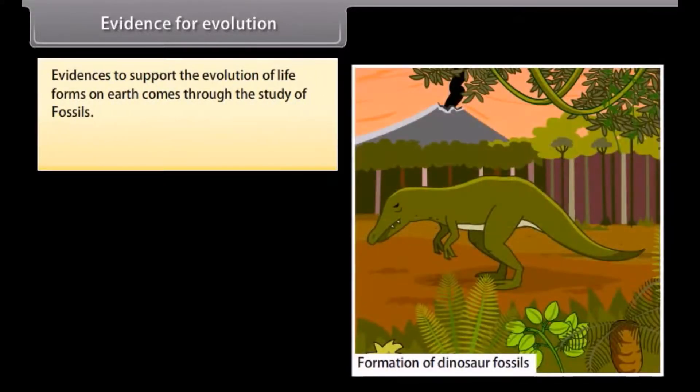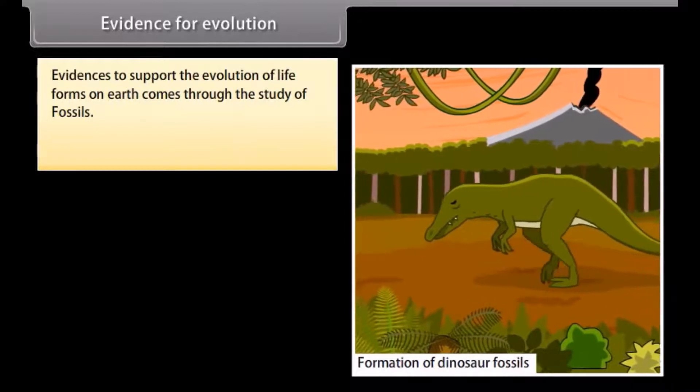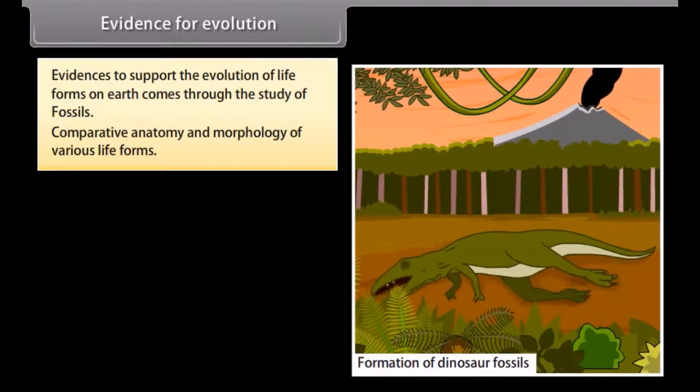Evidence for evolution. Evidences to support the evolution of life forms on earth comes through the study of fossils, comparative anatomy and morphology of various life forms.